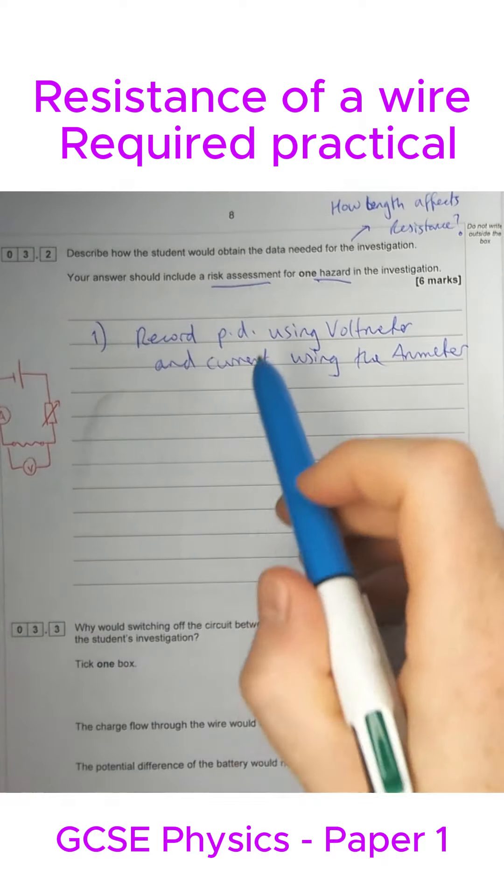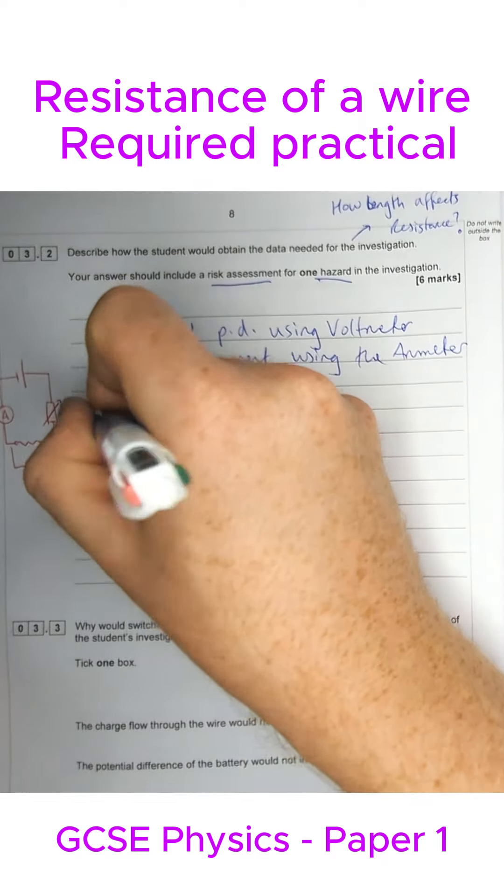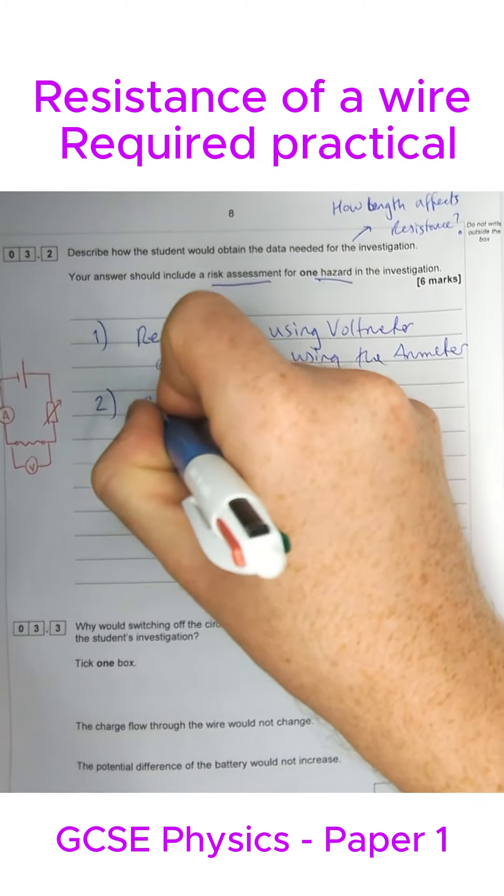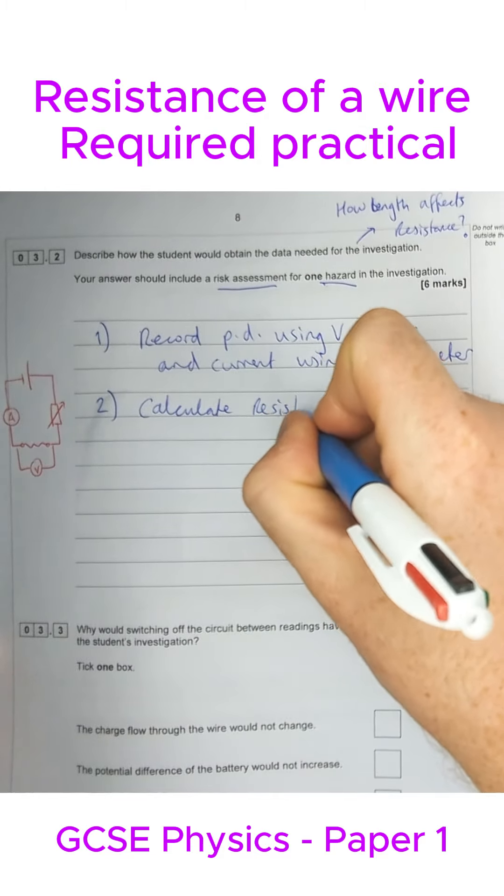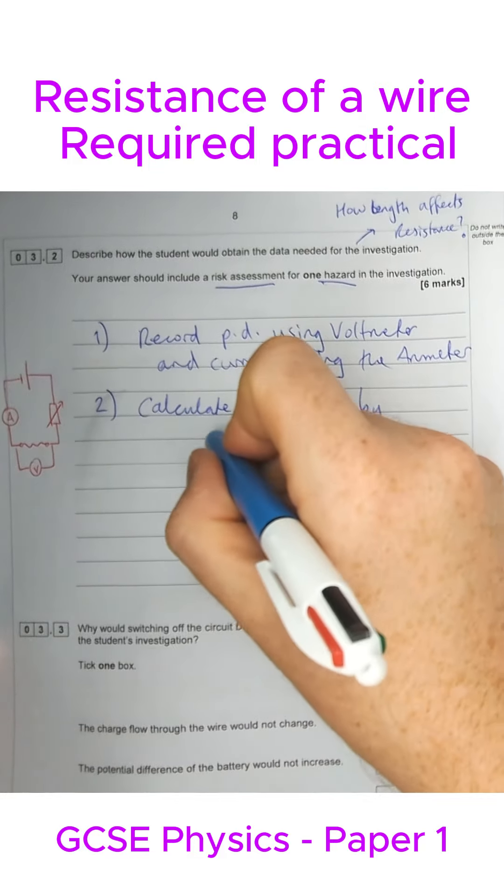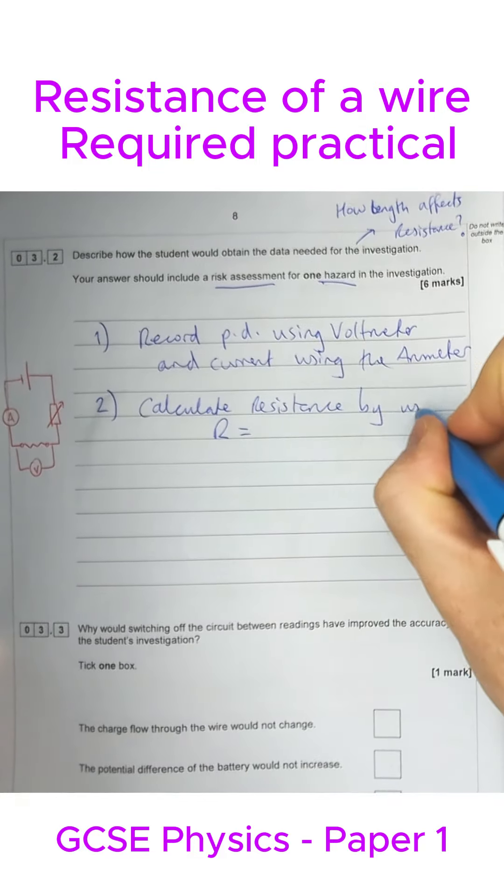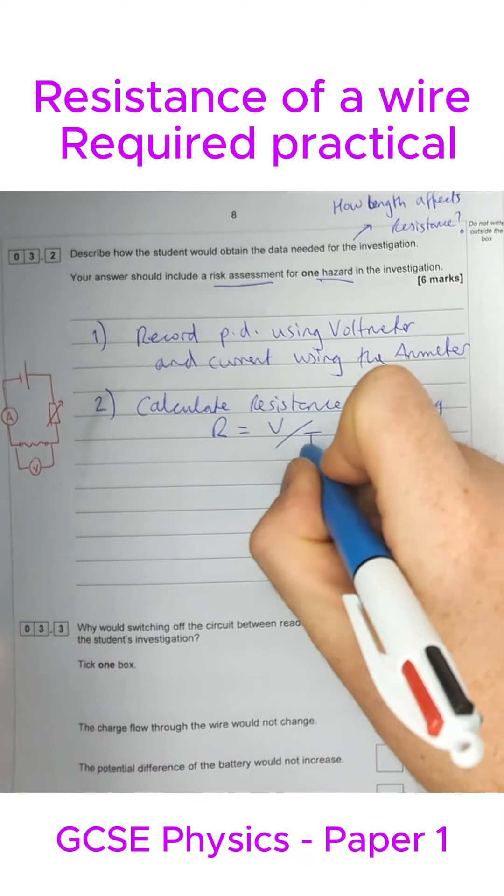Next thing we're going to do is look at, well, how does that help us find out the resistance? Well, there is an equation which you don't need to remember anymore, but you can calculate or work out the resistance, because that's what we're trying to find out, by using resistance equals PD or voltage divided by current. That's what we need right there.